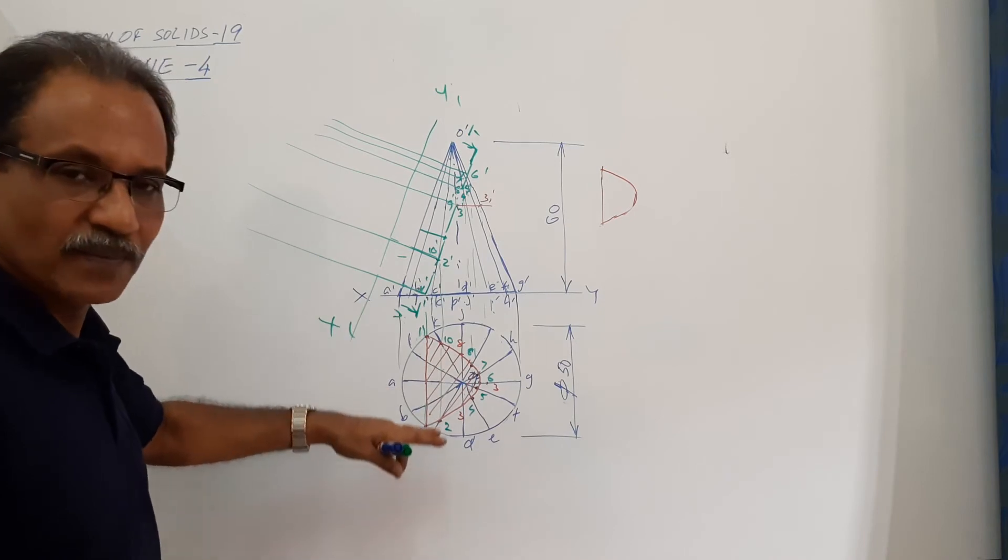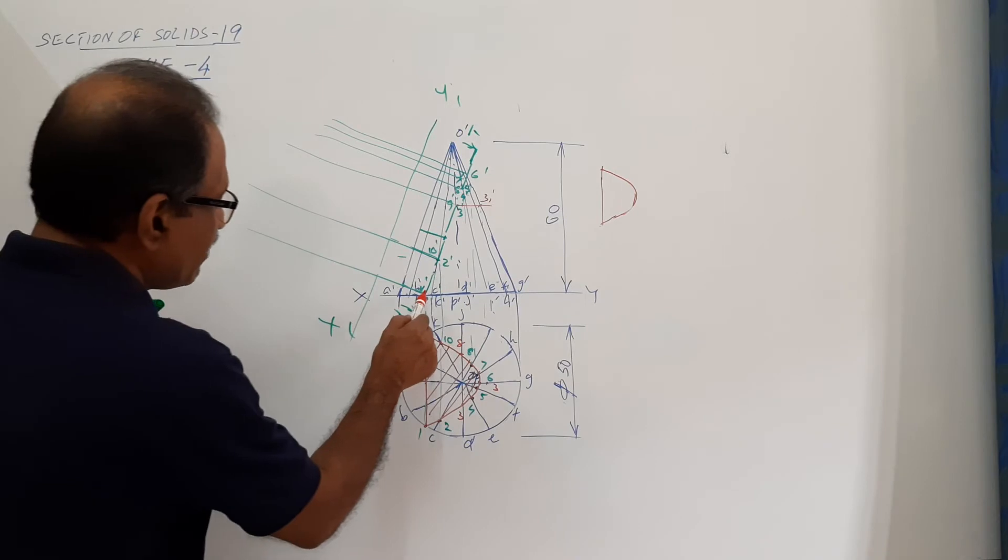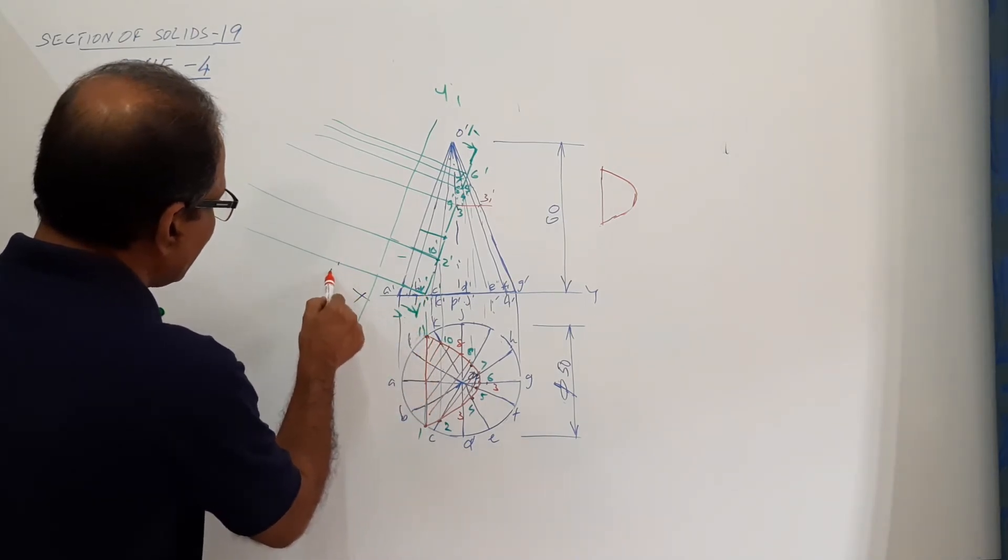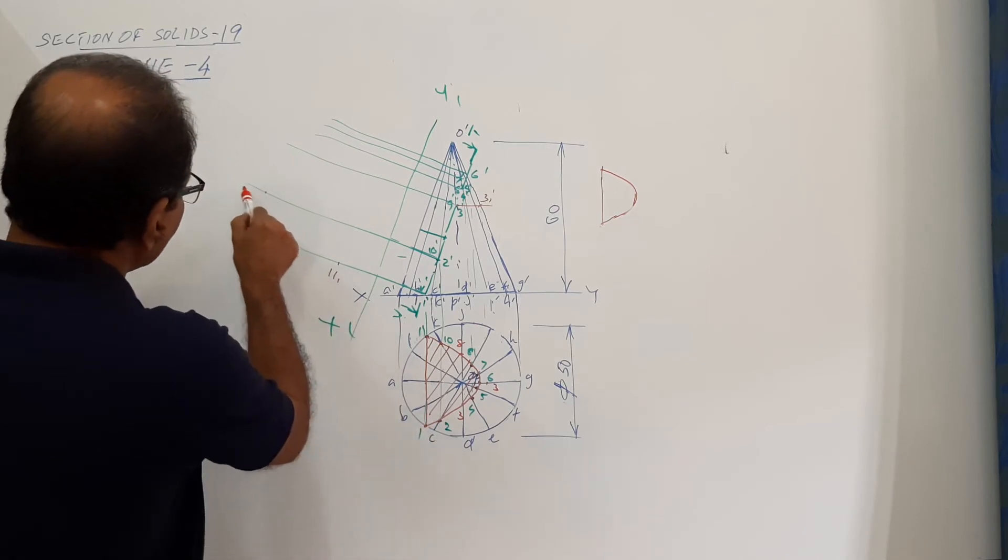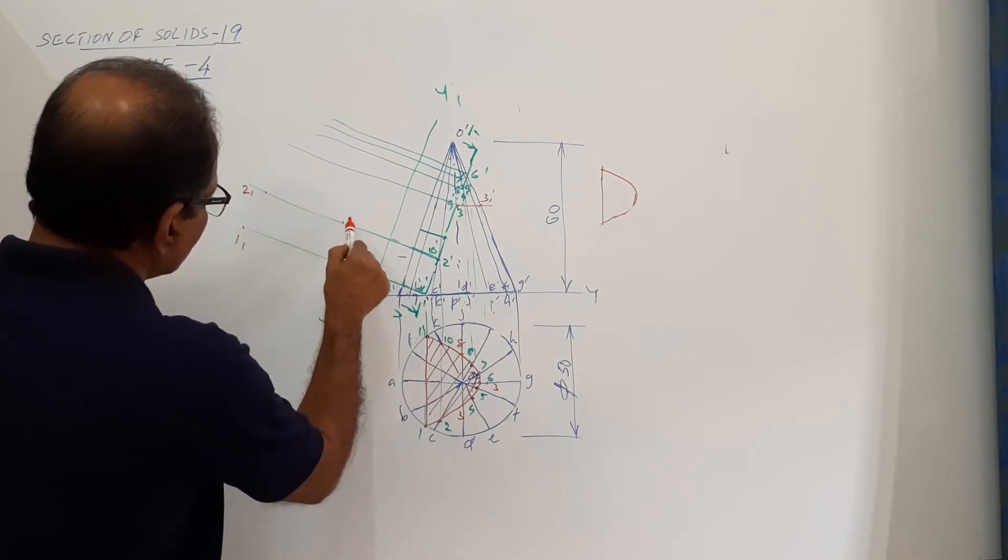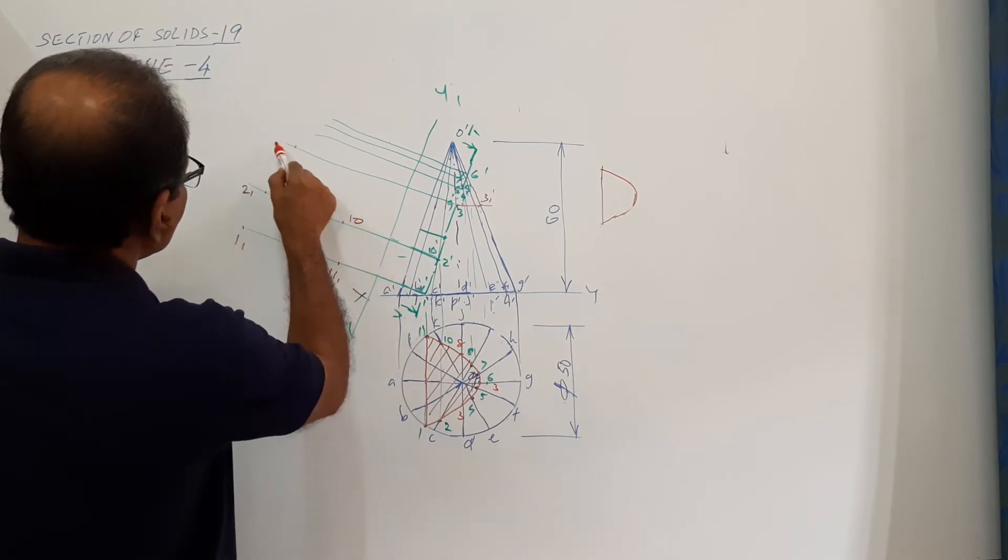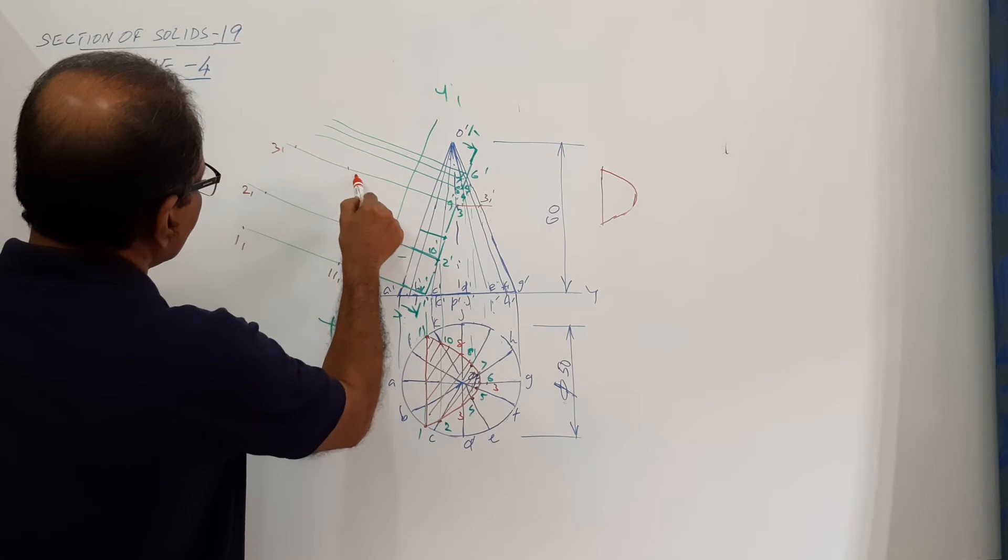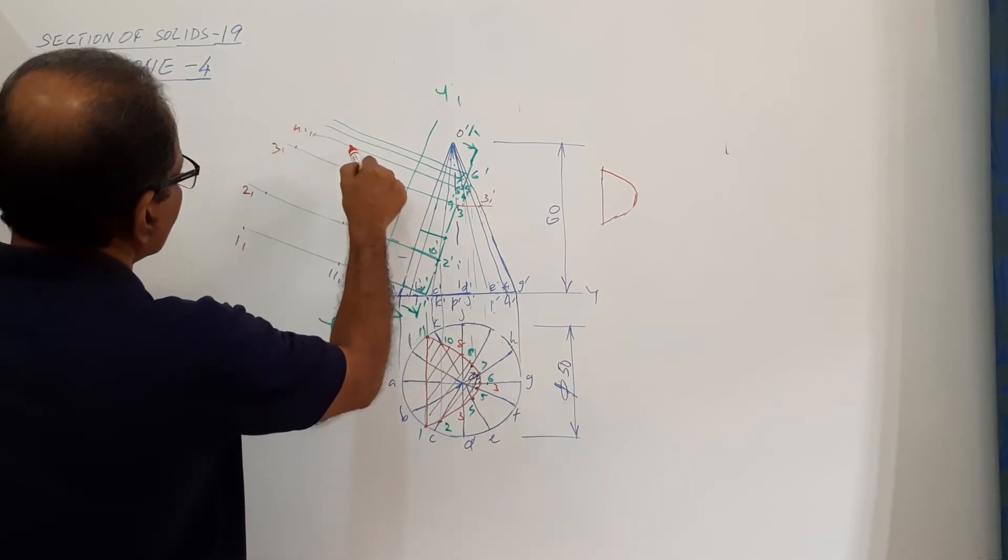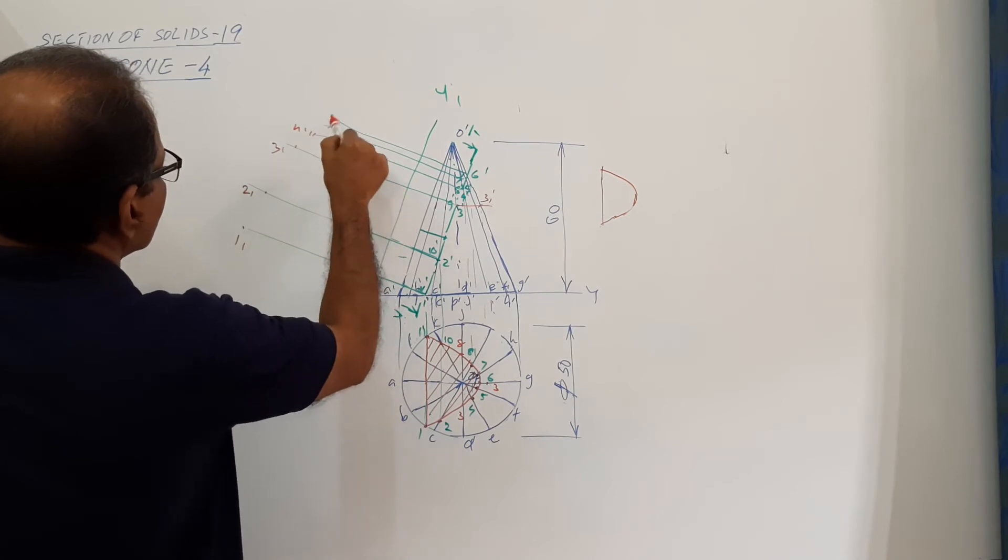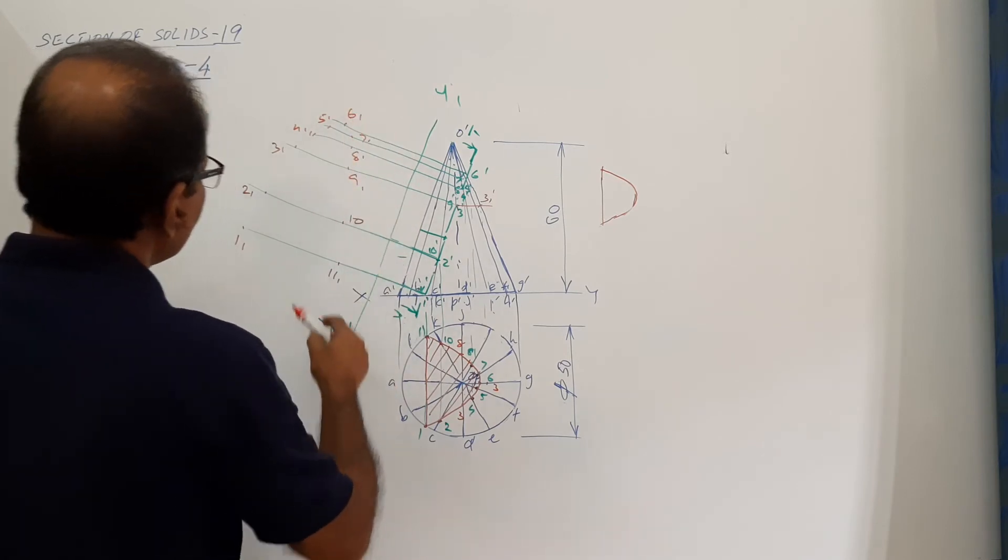Take the distance of one, two, three, etc. from XY and mark off on the respective projector. Eleven is this far away, eleven one. One is this far away, one one. Two is this far away, two one. Ten one, three one, nine one, four one, eight one, five one, seven one, and six one. Connect them.